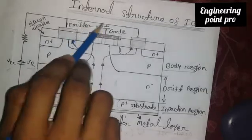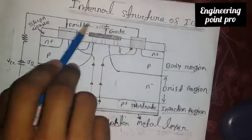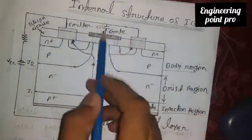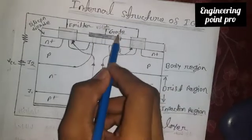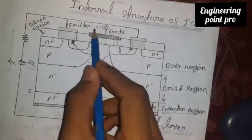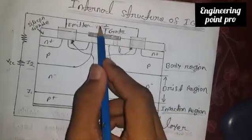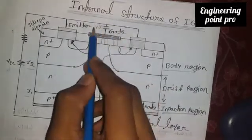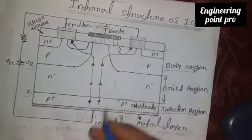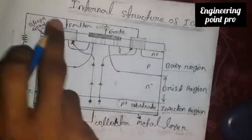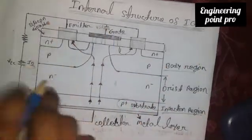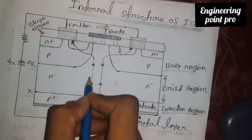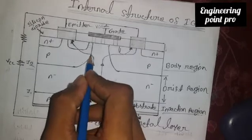Now, in the gate-emitter voltage, we can add the threshold voltage. When it reaches the threshold voltage, it will be activated. When it does, we can add voltage and then we can get a bonus conduction.